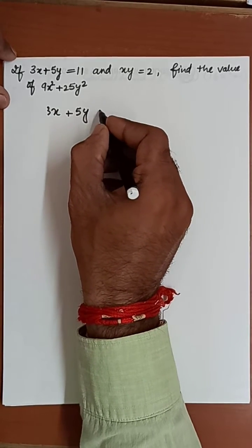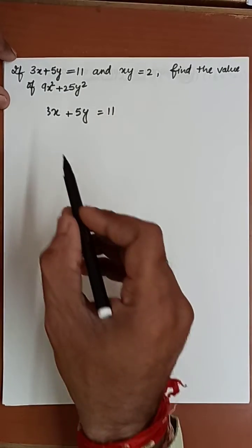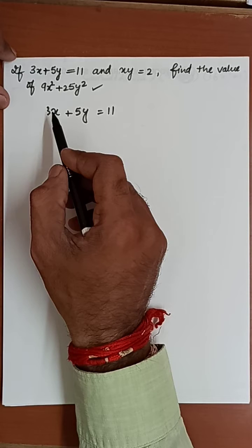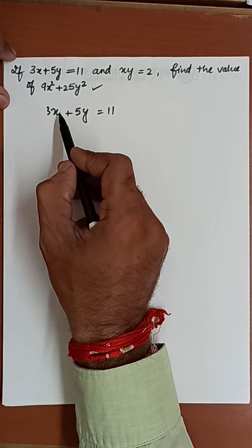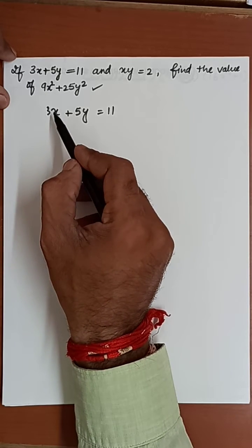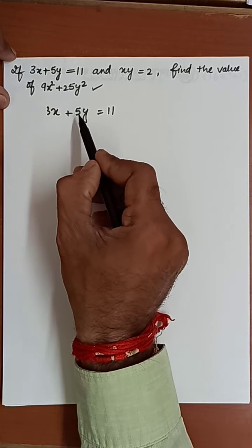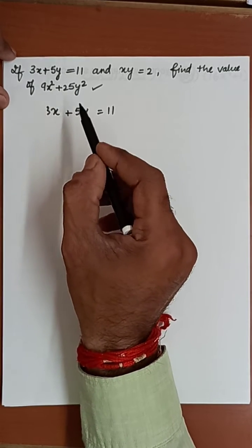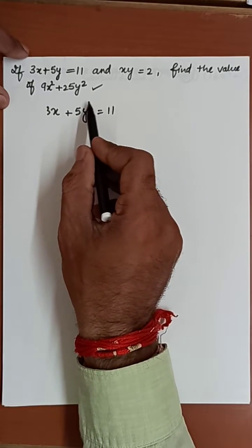Look at the relation between the given and the required one. If we do the square of 3, it will be 9; square of x will be x square; square of 5 will be 25; square of y will be y square. So it means we can do the square of this equation.